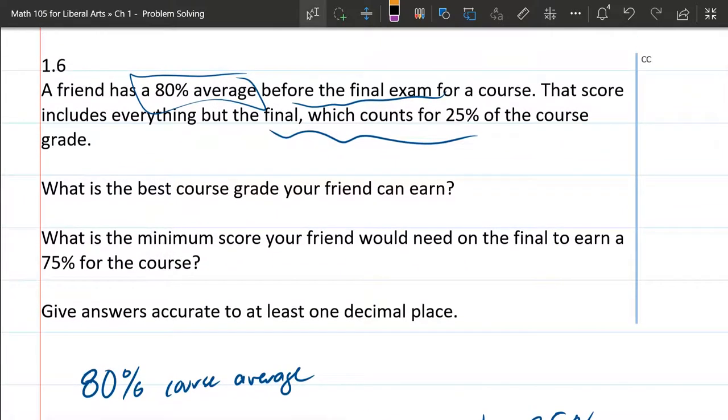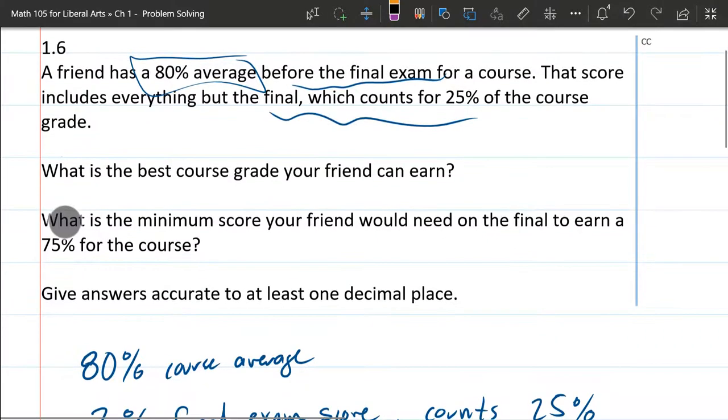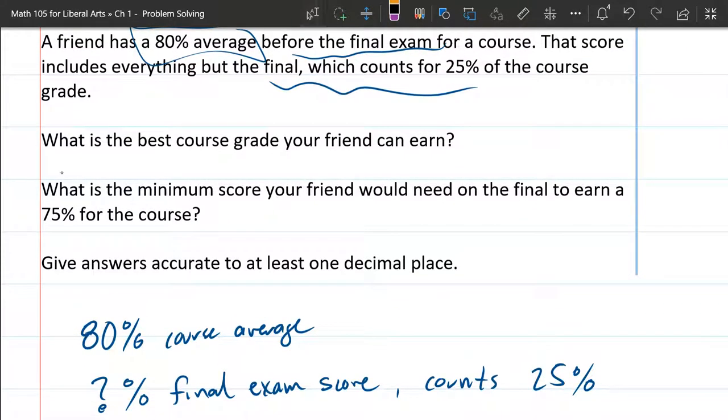First of all, 80% course average, so I have that written down. And then we have the final exam, don't know the score, so I just put unknown percent on the final exam score. But we do know it counts for 25% of the class grade.